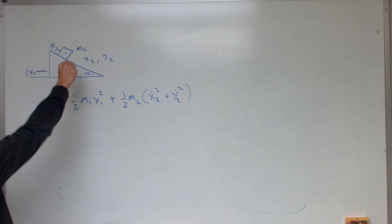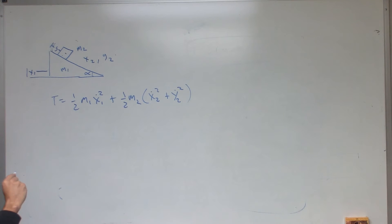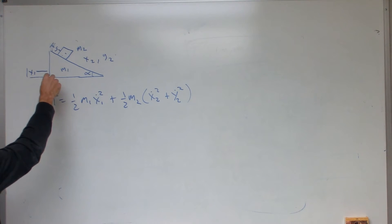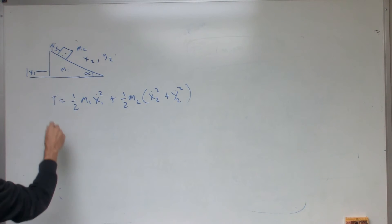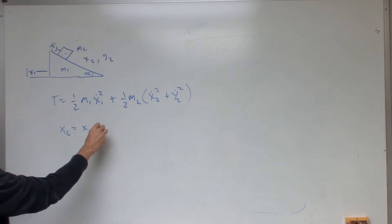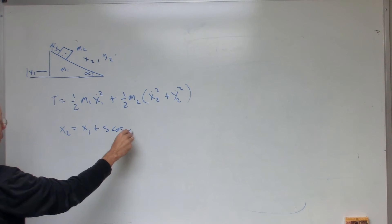But now I need, if I get an expression for x2 and y2 in terms of s, then I'm going to be better off. So if I look at this, I can find the x coordinate of the block. I'll say x2 equals x1 plus s cosine alpha,